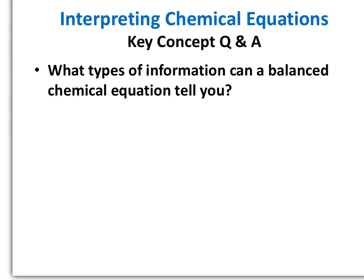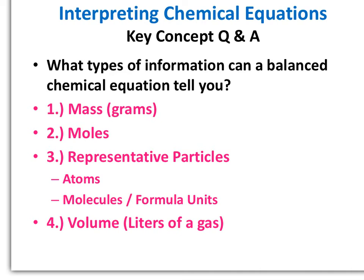For another key concept Q&A: when interpreting chemical equations, what types of information can a balanced chemical equation actually tell you? Pause the video and think about quantities we've used in chemistry. Some quantities we've discussed are mass, measured in grams; moles, the central unit of chemistry and a unit of counting; representative particles, also a unit of counting, which includes atoms, molecules, and formula units; and volume — we'll look more into volume later when we talk about liters of a gas at standard temperature and pressure.